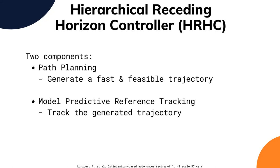The first MPC method is HRHC — Hierarchical Receding Horizon Controller. MPC is also called receding horizon control. There are two components: path planning and model predictive control for reference tracking. The path planning is responsible to generate a feasible trajectory that will guarantee maximal progress across the track — feasible meaning the model dynamics allow following that reference trajectory under constraints. The generated trajectory is then given to the MPC controller to follow.